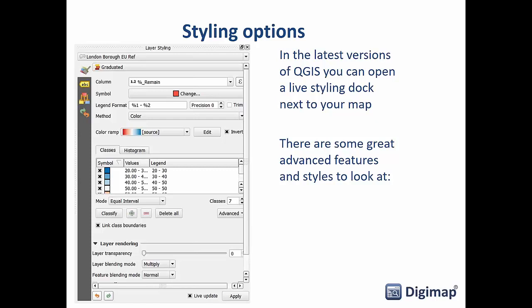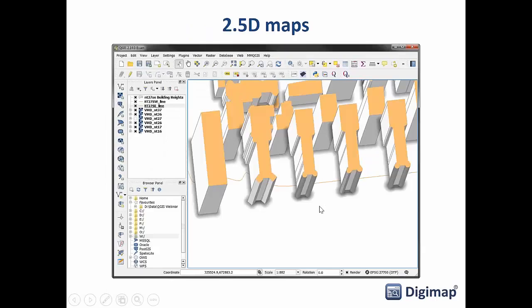I would recommend zooming in a little when using the live styling panel so there are fewer features to redraw each time you make a change. At the bottom of the panel is a live update checkbox you can turn off if you're making many changes that take a while to redraw. QGIS has really good advanced styling features — including 2.5D maps, which is not full 3D like QGIS 3 has, but a good approximation.